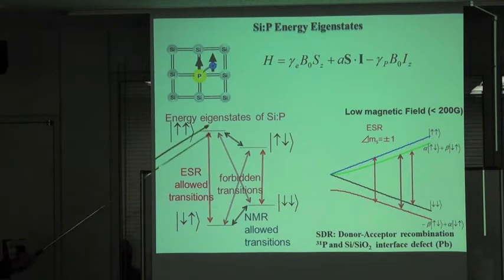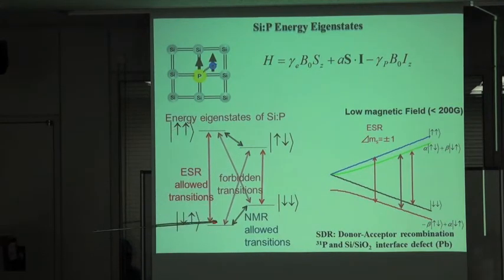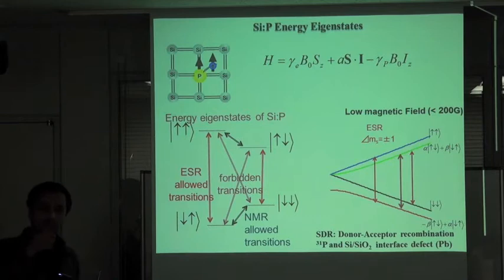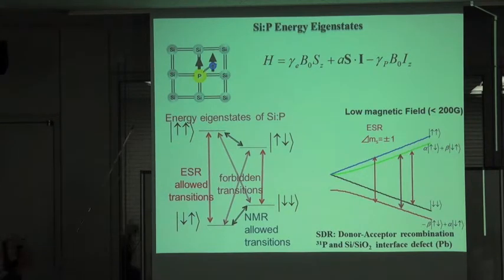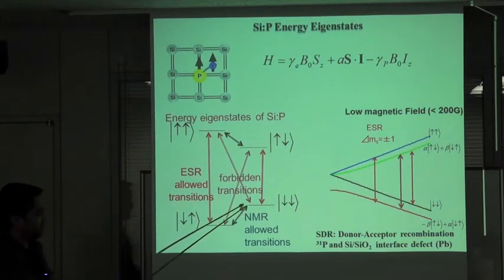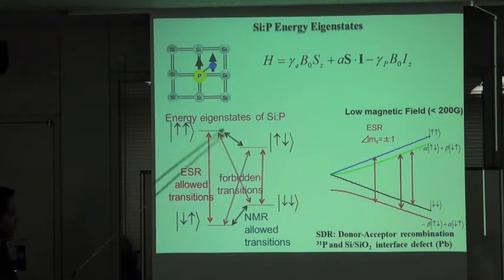In the high field regime, we have four eigenstates which are pure states. The transitions marked in red are ESR allowed transitions, meaning only the electron spin flips—from down spin to up spin—while the nuclear spin remains intact. Then we have NMR allowed transitions. There are also some forbidden transitions which we generally do not see in the high field regime.